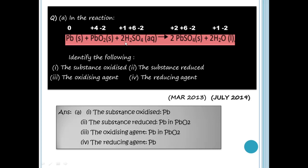Setting up the equation: 4 + 2x - 16 = 0, so 2x - 12 = 0, therefore x = 12/2 = 6. So sulfur has an oxidation number of +6.